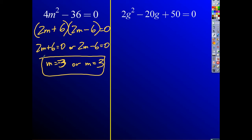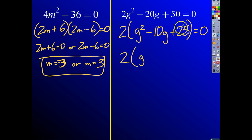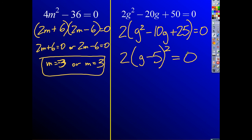Now for the second practice problem: 2g squared minus 20g plus 50 equals 0. This isn't a perfect square directly, but I can factor out a 2 to get 2 times g squared minus 10g plus 25 equals 0. The interior part is a perfect square — square root of g squared is g, and 2 times 5 equals 10 — so it factors as 2 times g minus 5 squared equals 0. Dividing by 2 gives g minus 5 equals 0, so g equals 5.